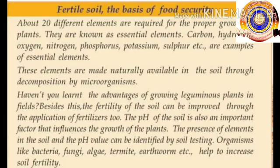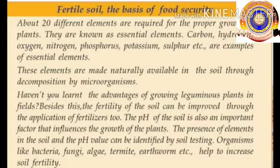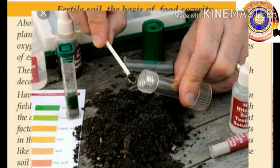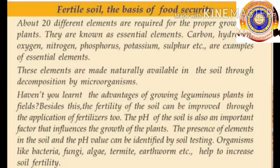You also learned about the advantages of growing leguminous plants in fields in your seventh standard. Besides this, the fertility of the soil can be improved through the application of fertilizers. The pH of the soil is also an important factor that influences the growth of plants. The presence of elements in the soil and the pH value can be identified by soil testing. Organisms like bacteria, fungi, algae, termites, and earthworms help to increase soil fertility.